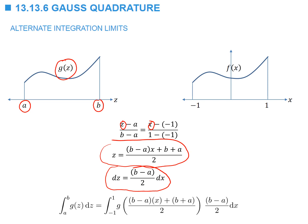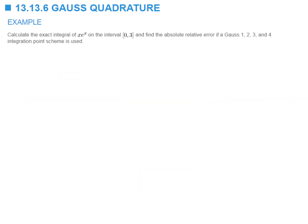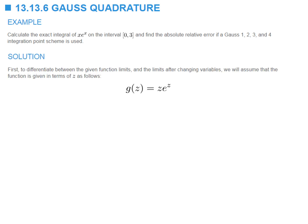After substitution, the integration limits are now between negative one and one. Here's an example: we'd like to integrate the function x multiplied by e to the power x on the interval from zero to three, and find the absolute relative error when a Gauss one-, two-, three-, and four-point integration scheme is used. So we have g of z equal to z multiplied by e to the power z.